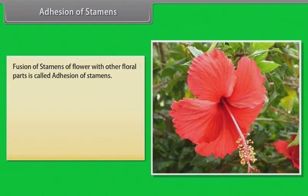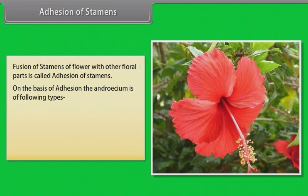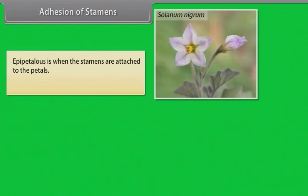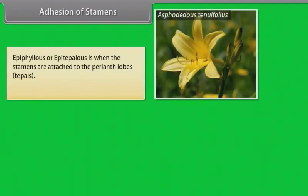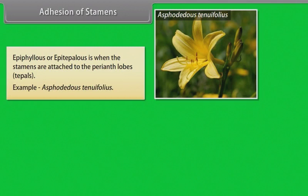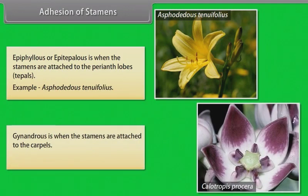Adhesion of stamens: Fusion of stamens with other floral parts is called adhesion. Types: Epipetalous — stamens attached to petals, example Solanum nigrum (brinjal). Episepalous — stamens attached to sepals, example Verbena. Epiphyllous or epitepalous — stamens attached to perianth lobes (tepals), example Asphodelus tenuifolius. Gynandrous — stamens attached to carpels, example Calotropis procera.